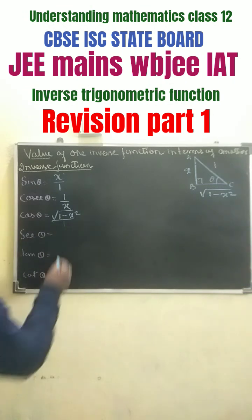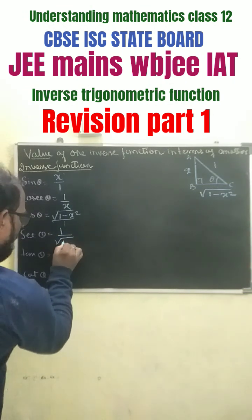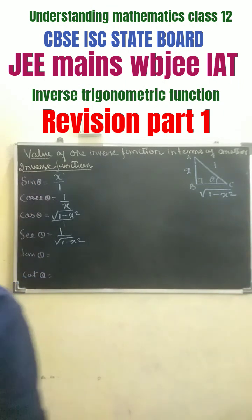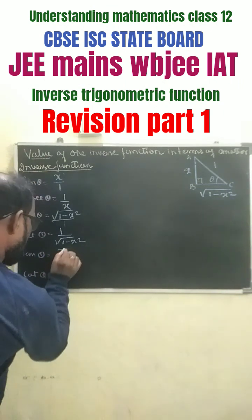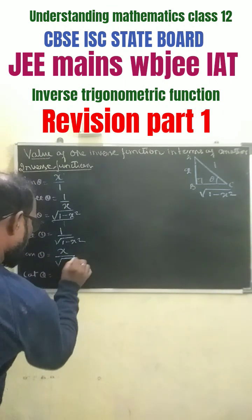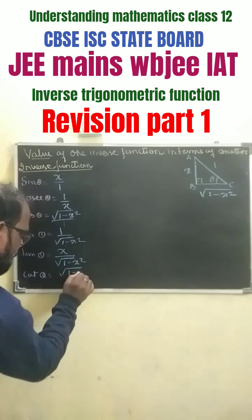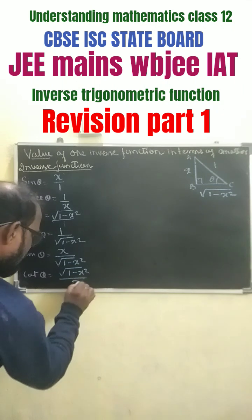Secant theta becomes 1 by root over 1 minus x squared. Tan theta equals x by root over 1 minus x squared, and cot theta equals root over 1 minus x squared by x.